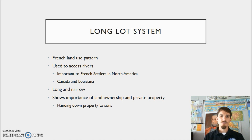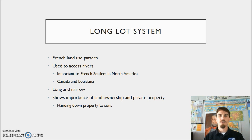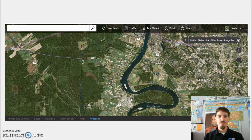One distinct feature of the long lot system is that the lots are very long and narrow. Part of this is significant because the French expected owners of that land to subdivide it and hand it down to their sons, so over time the long lots would be divided into multiple pieces that sons could inherit. Like the English system, it still reflects the understanding of private ownership of property, but here we see something a little different in terms of the inheritance of property over time.